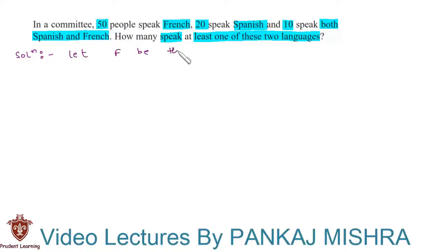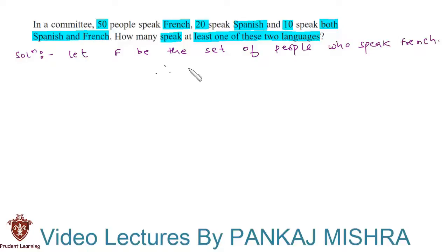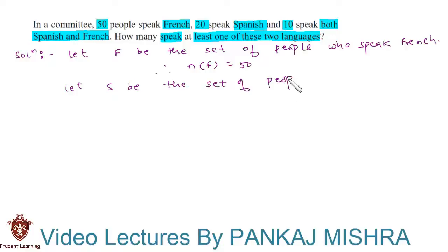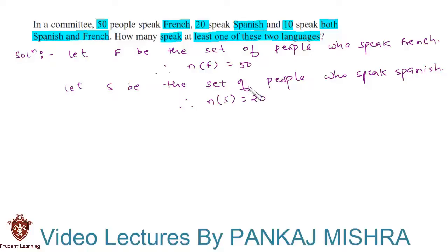Let F be the set of people who speak French. Therefore we can say that the number of elements in F equals 50, because there are 50 people who can speak French. And let S be the set of people who speak Spanish. Therefore the number of elements in S equals 20, since 20 people can speak Spanish.